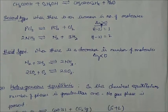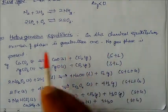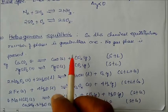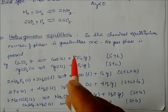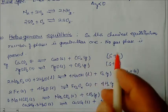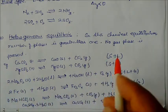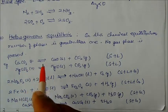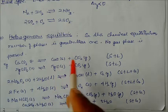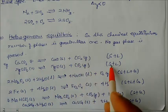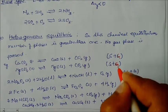Now, heterogeneous equilibria. Under heterogeneous equilibria, the number of phases is greater than one. Whatever the states of reactants and products, there will be more than one phase — it may be solid and liquid, or solid and gas. For example, calcium carbonate (solid) decomposes into calcium oxide (solid) plus carbon dioxide (gas). Similarly, magnesium carbonate gives a solid plus gas phase.